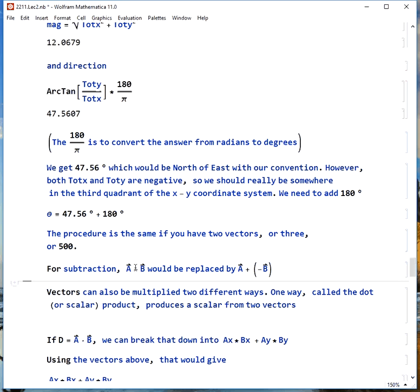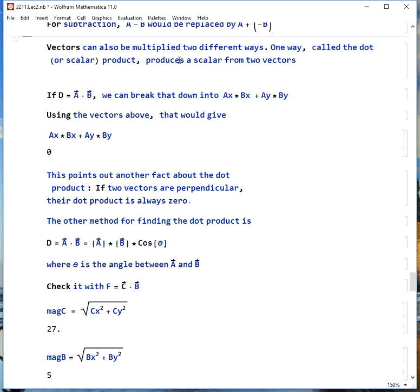Subtraction would work the same way. We would just make the components of B negative from what are defined A minus B and add them together. Vectors can also be multiplied, and there are two different ways to multiply them. We can put them together so that we get a scalar out of them, or we can put them together so that we get a vector out of them.